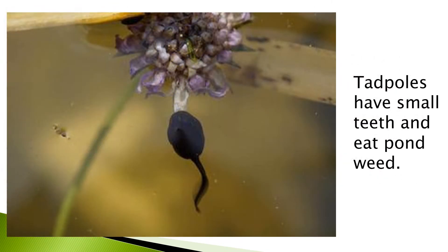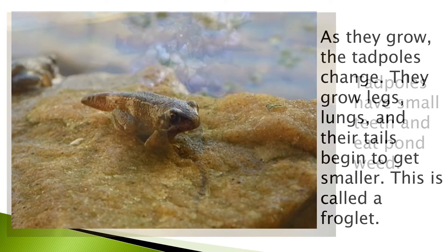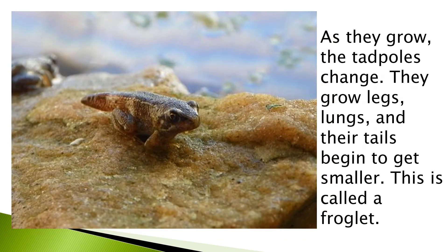Tadpoles have small teeth and eat pond weed. As they grow, the tadpoles change. They grow legs and lungs, and their tails begin to get smaller. This is called a froglet.